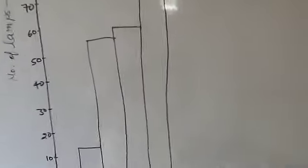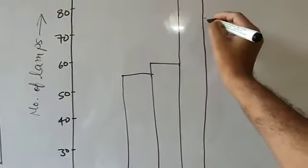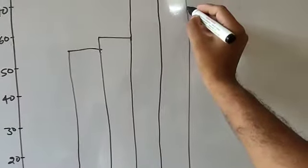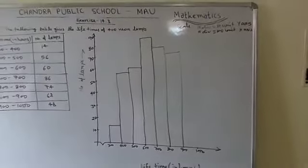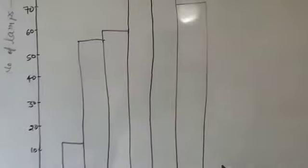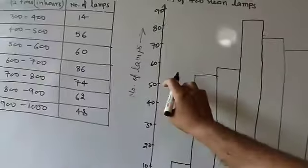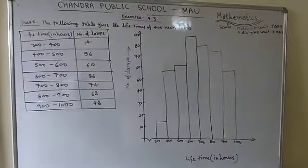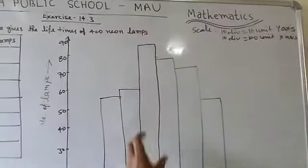For 700 to 800, the frequency is 74 — 70 is marked, so 74 will be approximately just above that line. For 800 to 900, it is 62 — 60 is marked, so 62 is approximately just above. For 900 to 1000, it is 48 — just below 50. On the actual graph you will get the exact positions using the scale. This completes the histogram for question number 5. The rectangles should be drawn with straight lines using a scale.